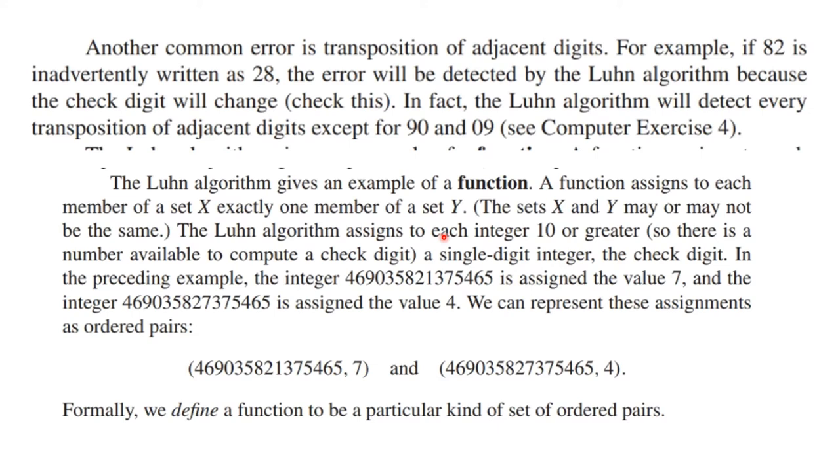This is an example of something we're going to study in this chapter called a function. A function assigns to each member of a set exactly one element of another. For example, the Luhn algorithm assigns to each integer 10 or greater a single digit, that is the check digit. So this number is assigned a seven, and this number would be assigned a four.